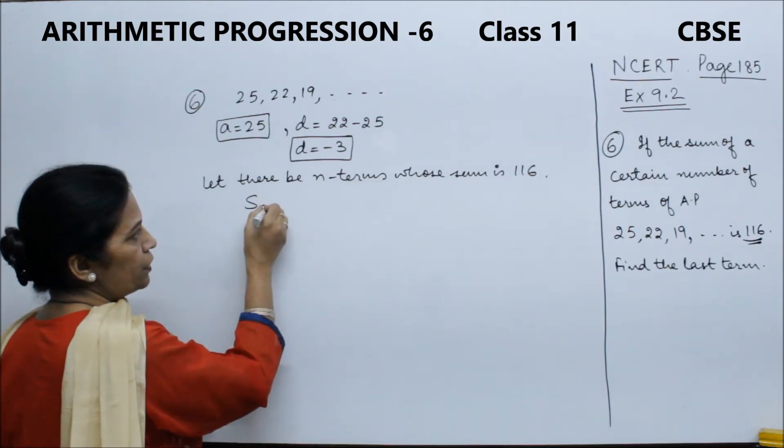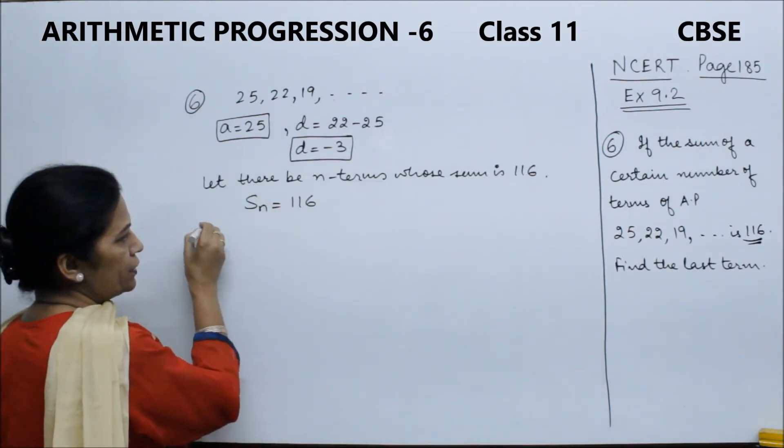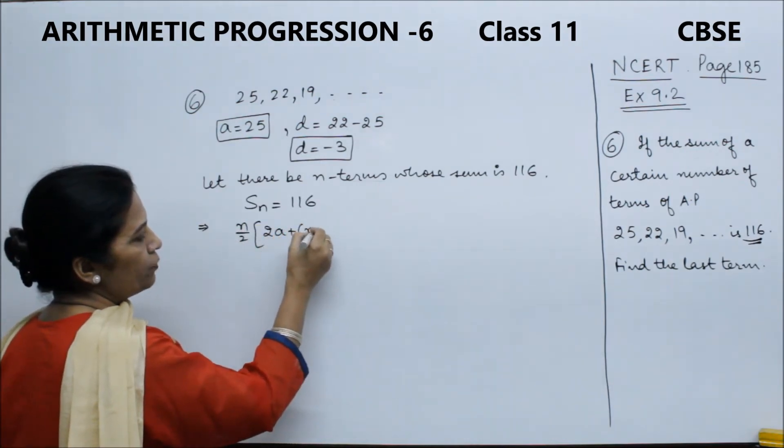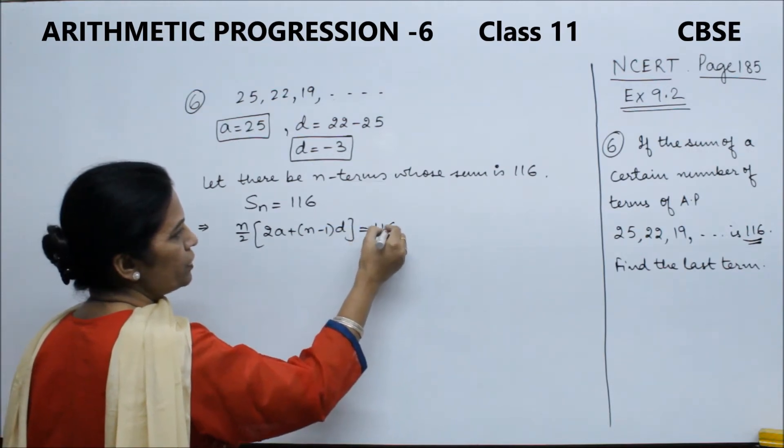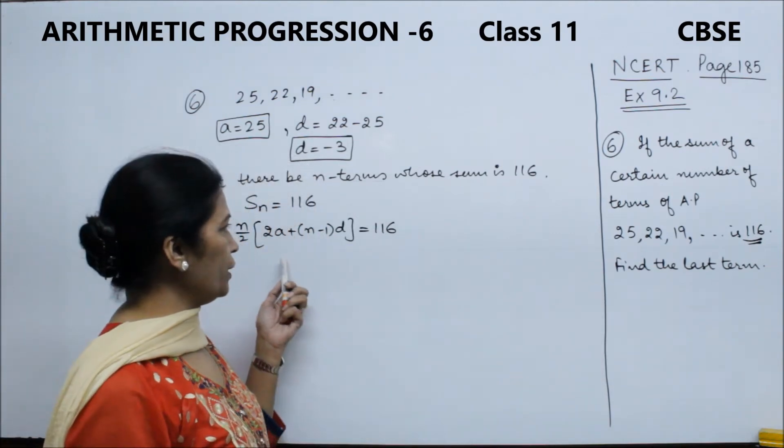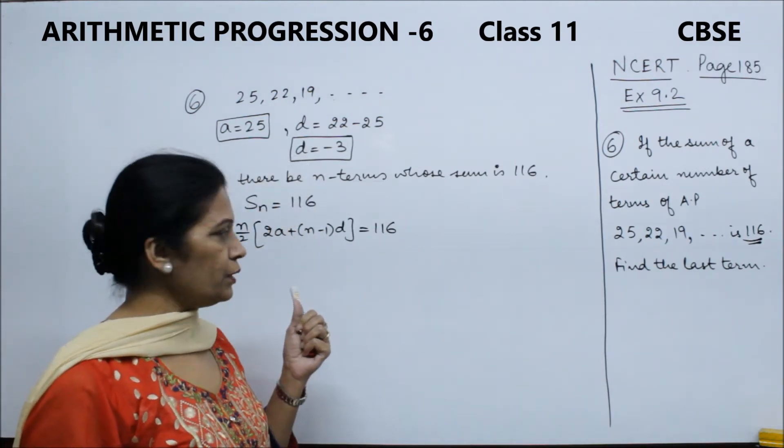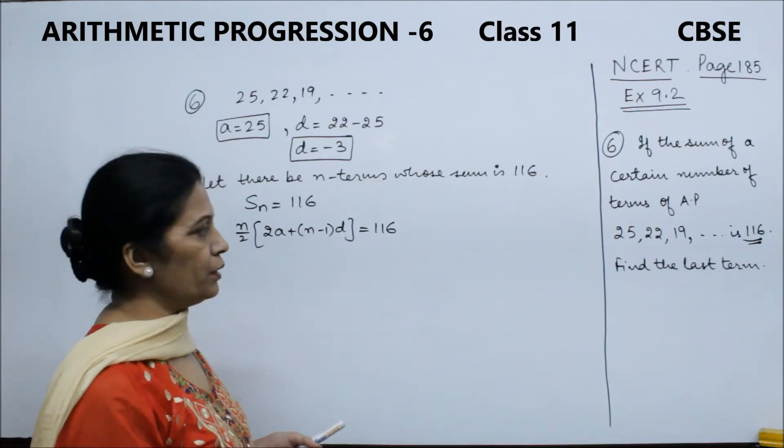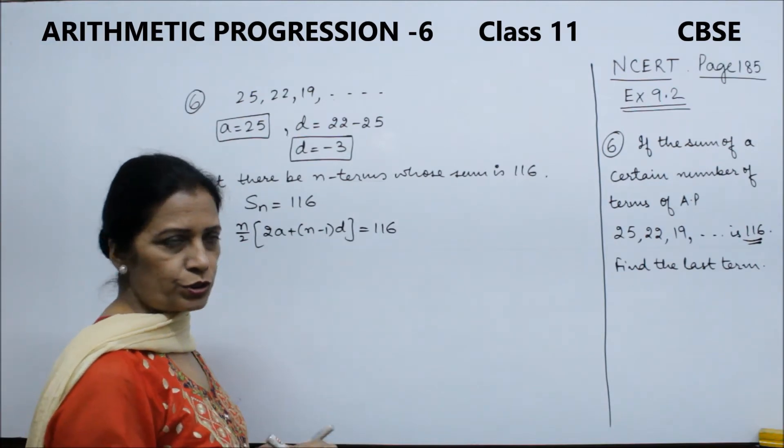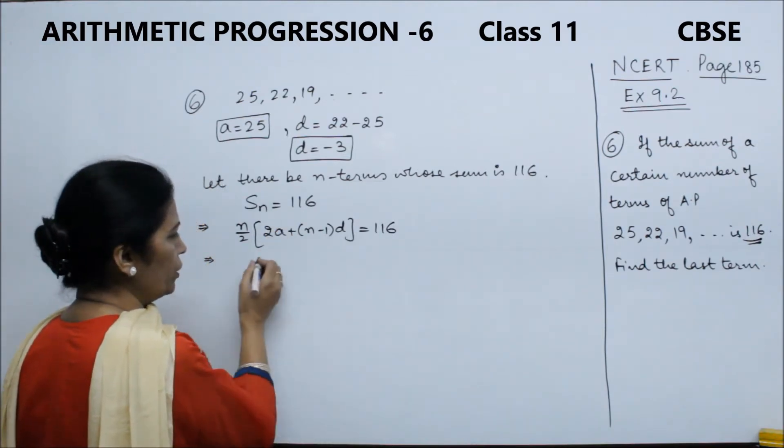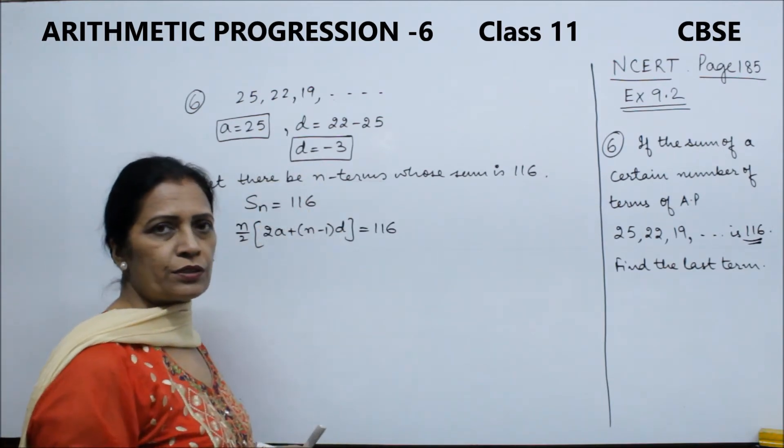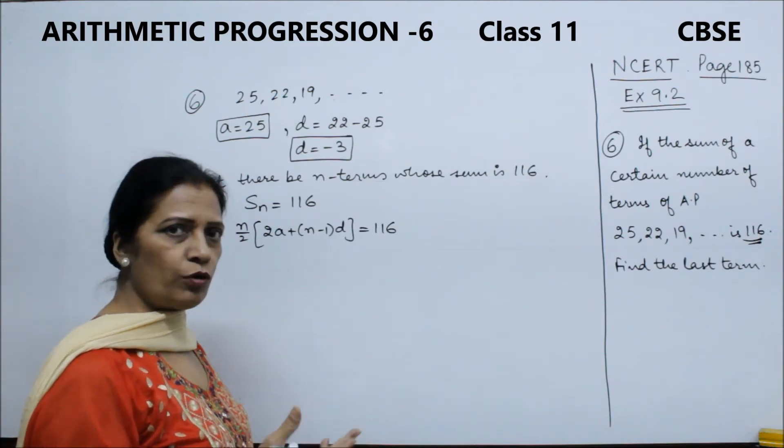We will use the Sn formula: n upon 2, times 2a plus n minus 1 into d, is equal to 116.